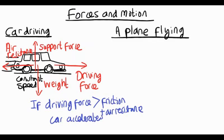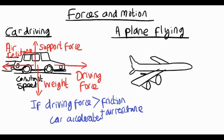How about a plane flying along? Imagine a plane going at a constant speed. If the speed is constant, Newton's first law tells us all the forces acting on the plane must be balanced. Now the plane is huge. It's heavy. It's got a big weight.